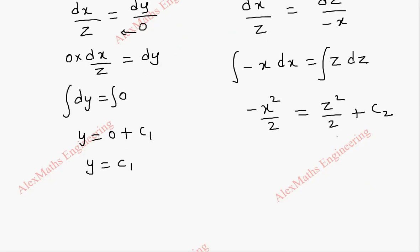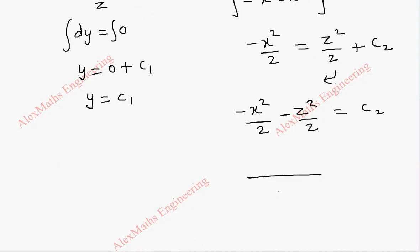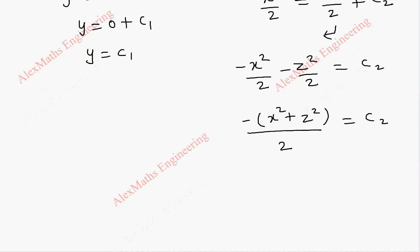Now let's take this term to the other side. So we have minus x square by 2 and this is minus z square by 2 equal to c2. Let's take the LCM, which is 2. We take the minus sign common, so x square plus z square equal to c2. Taking this 2 to the other side and minus to the other side, we get x square plus z square is equal to minus 2c2.